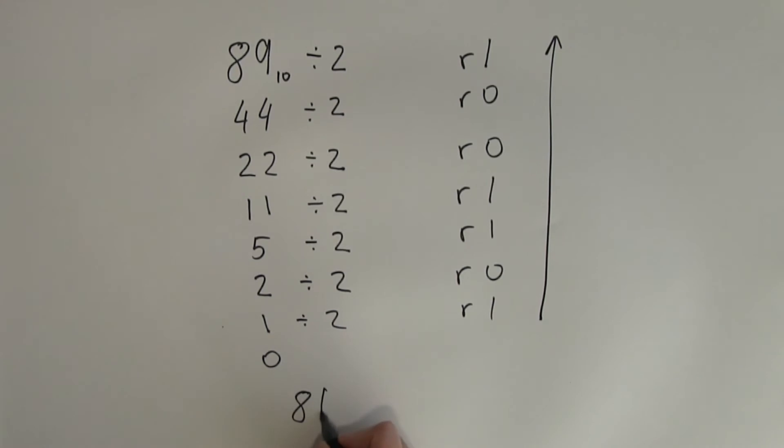So 89 in decimal is 1011001 in binary. I'm going to leave you to check if the answer is correct.